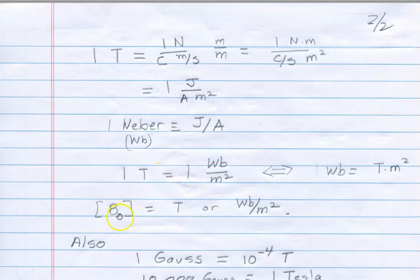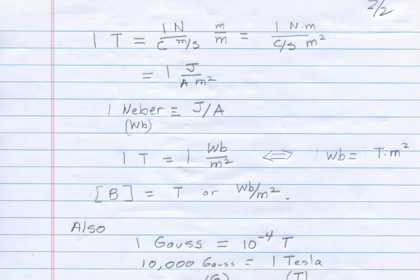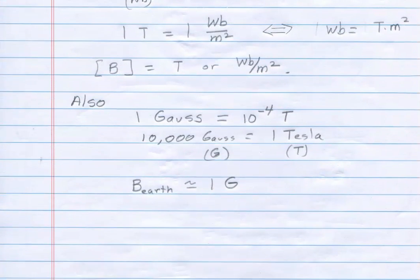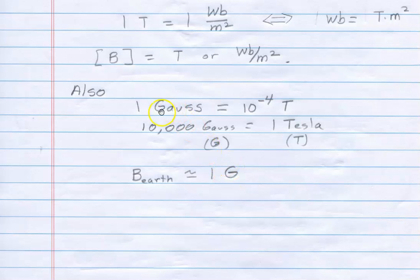In any event, magnetic fields will be in Teslas, or occasionally you may see this Weber per meter squared for the unit of magnetic field. Another unit that arises was actually first introduced by Gauss, Gauss's law, Carl Frederick Gauss.